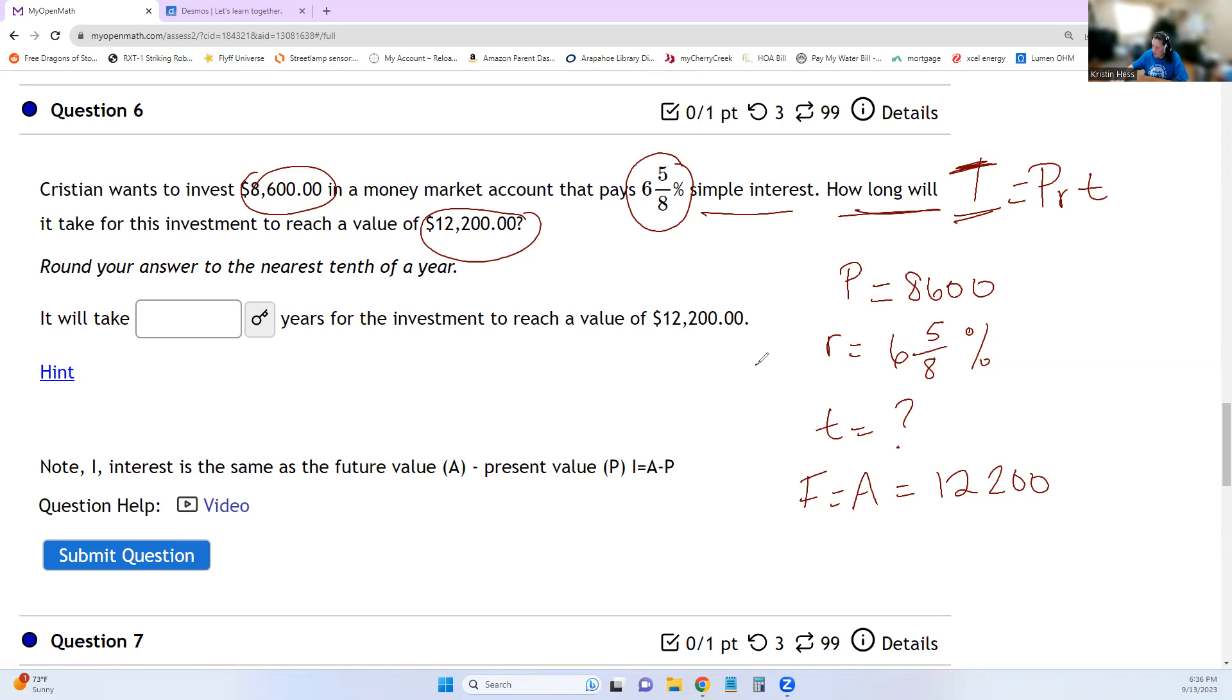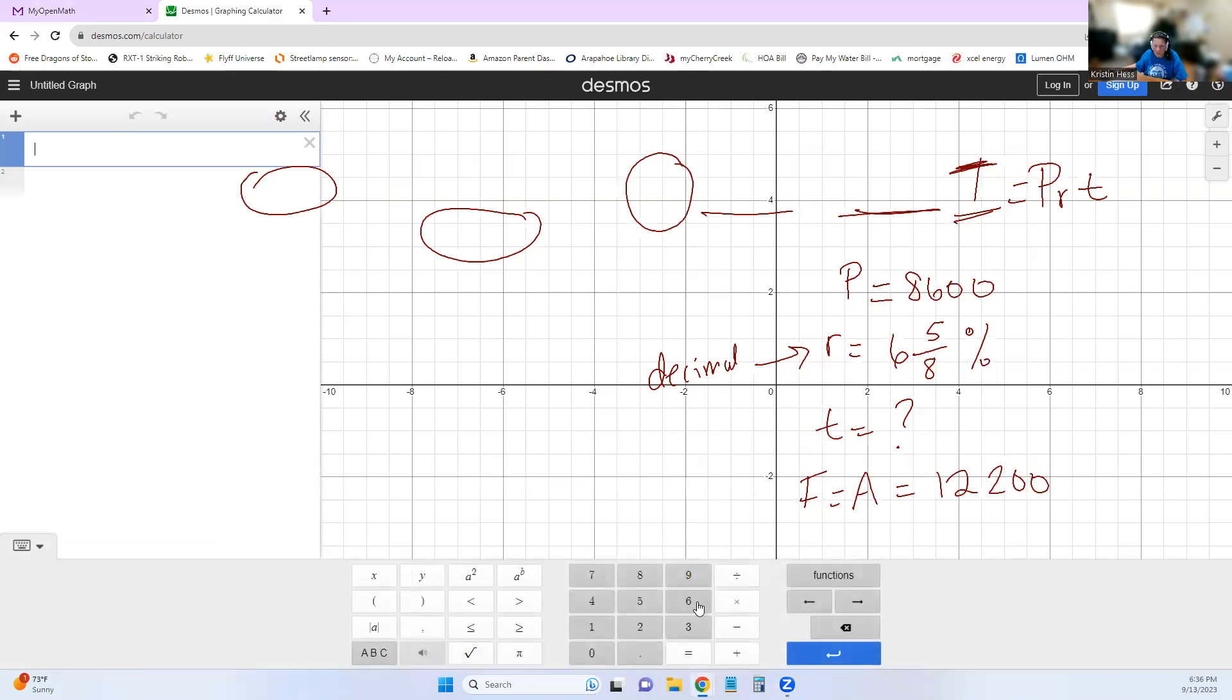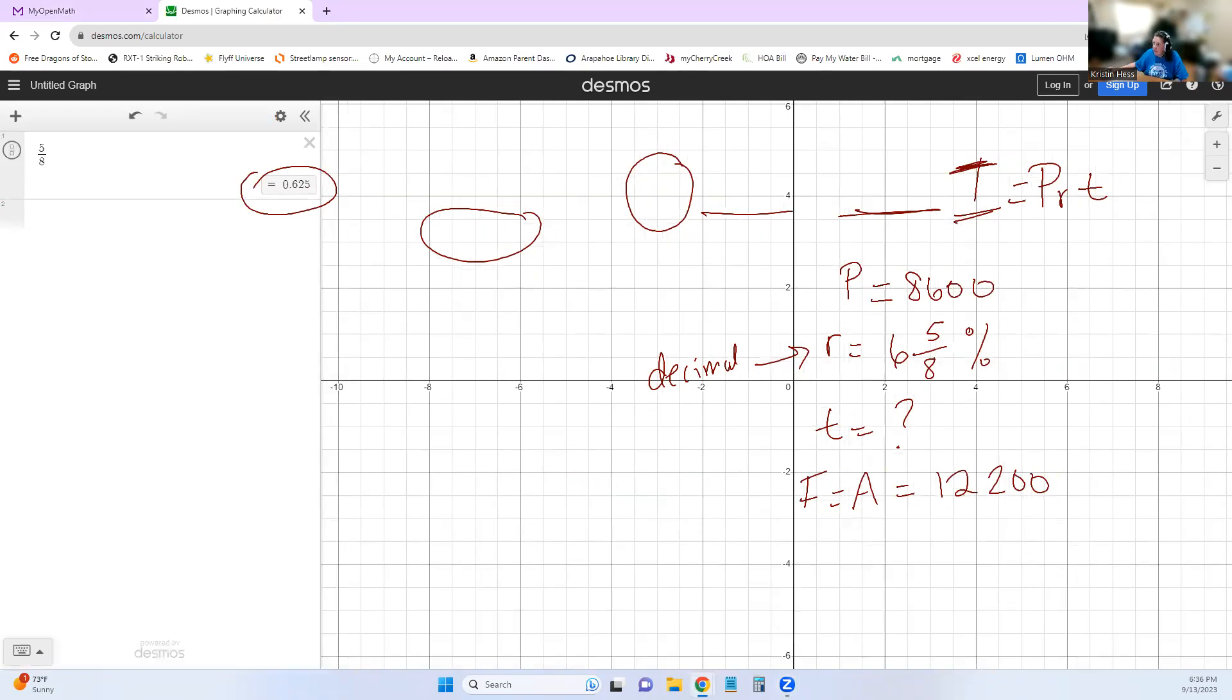So the first thing we need to do is the interest rate needs to be a decimal. So if you know what 5 eighths is as a decimal, great. If not, open up a calculator. I like Desmos. And I'm going to start by typing in 5 eighths, which is 0.625. So that means that our interest rate, it's going to take two steps to get this to a decimal. So first, 6.625%, and now to get it as a decimal, divide by 100. So take this number, divide it by 100. Our rate is equal to 0.06625. So that's our rate.